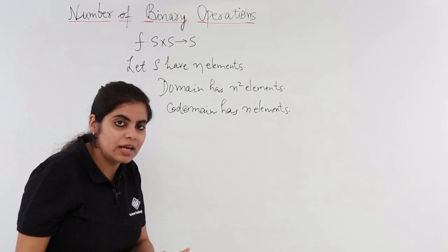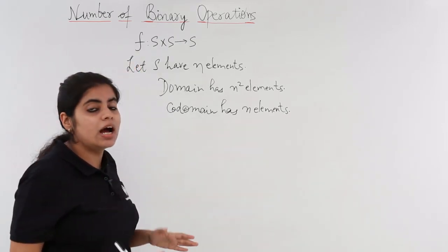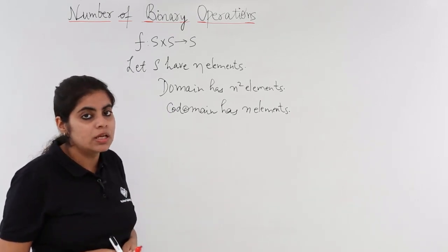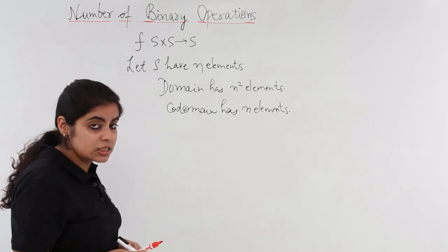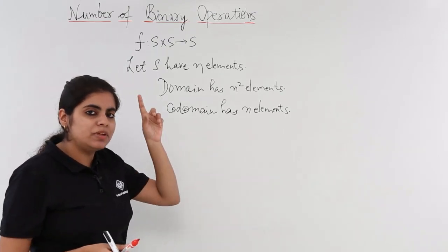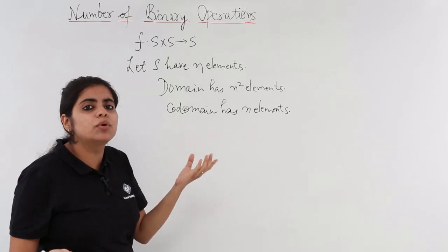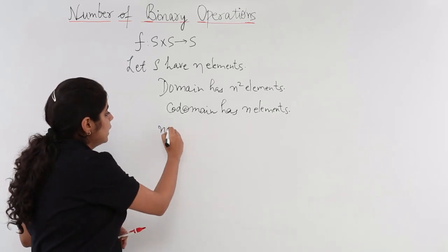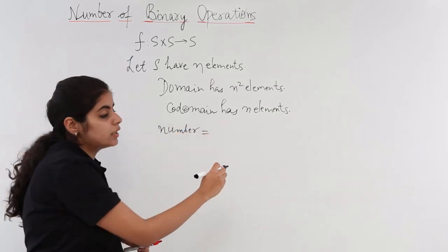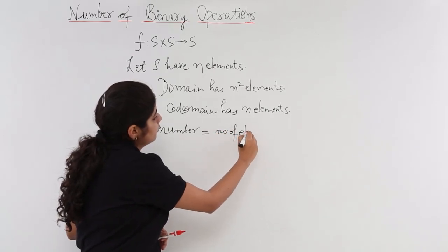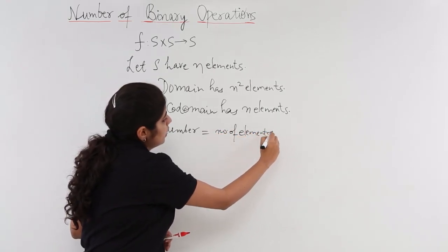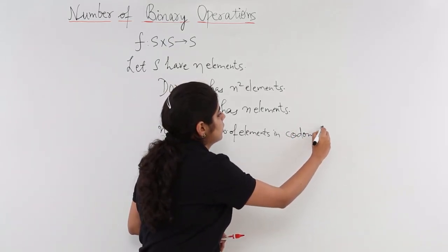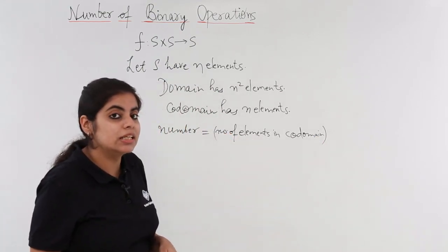So by far what we have seen, we have seen we have a function and we have seen how many elements are there in S, in S square, that means in domain and codomain. Now what is my task? My task is to remember that we had done something called computing number of functions. There was a formula and what was the formula in that case? The number is equal to number of elements in codomain power number of elements in domain.